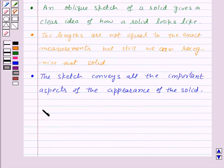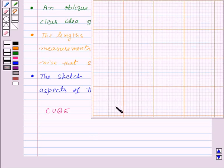So, let us try to draw an oblique sketch of a cube whose measurements are 2 units by 2 units by 2 units. That is, each side of the cube is equal to 2 units. For this, we will take a squared paper.